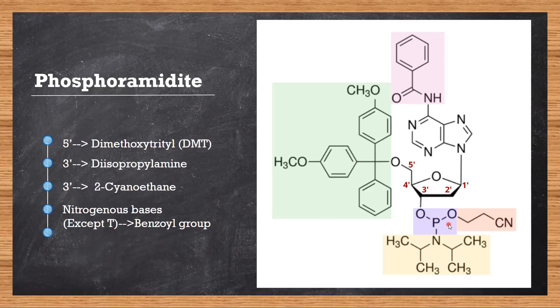That is done by two groups. First one at the bottom is the diisopropylamine group. Di meaning there are two of these similar structures, and iso is this L-shaped linkage. This is diisopropylamine followed by another group called 2-cyanoethane.